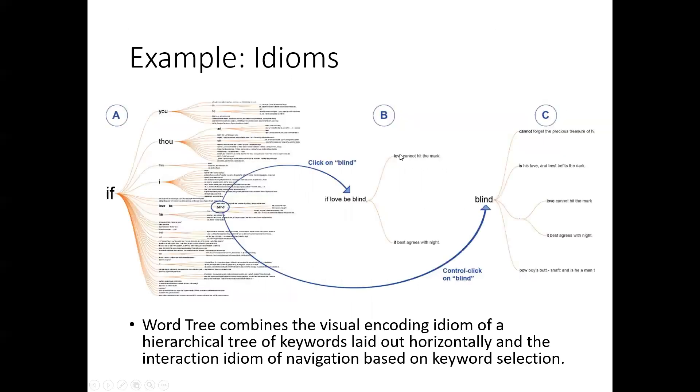Here's an example of an idiom. This is a word tree that allows you to explore the word blind in more depth. So here, if love be blind. So we click on blind, it says, okay, an interpretation might be love cannot hit the mark or at best agrees with night. And then blind, if we control click on it in the original, we can basically get even more detail on it.